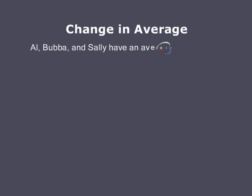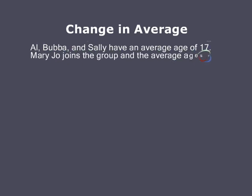Change in average questions are common on the test. Remember, when you have a change in average, they're vulnerable if you go out to the totals, as in this case. Al, Bubba, and Sally have an average age of 17. Mary Jo joins the group and the average age goes to 22. How old is Mary Jo?